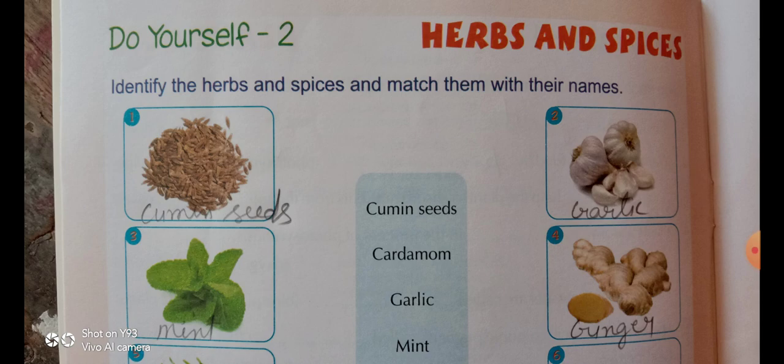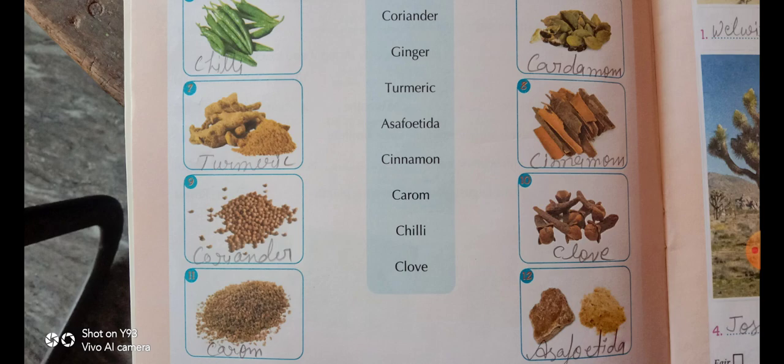Second: garlic — G-A-R-L-I-C. Third: mint — mint means podina. Fourth: ginger — G-I-N-G-E-R. Fifth: chili — C-H-I-L-L-I. Sixth: cardamom — C-A-R-D-A-M-O-M — cardamom, meaning chhoti elaichi. Seventh: turmeric — T-U-R-M-E-R-I-C.